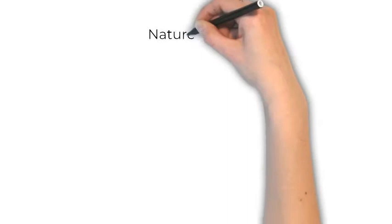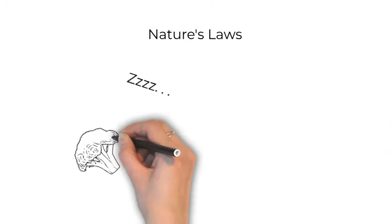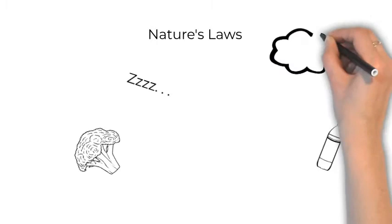These things would come around from violating nature's laws, which are good sleep, healthy food, healthy drink, healthy thoughts, moderate exercise, clean air, and getting out in nature and sunshine.